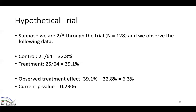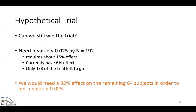With current data our p-value is 0.2306 — well above the 0.025 we need. Can we still win this trial? We're two-thirds through, and at the final analysis at 192 subjects we need p < 0.025, which requires about a 15% observed effect. Currently we only have a 6% effect with only a third of the trial left.